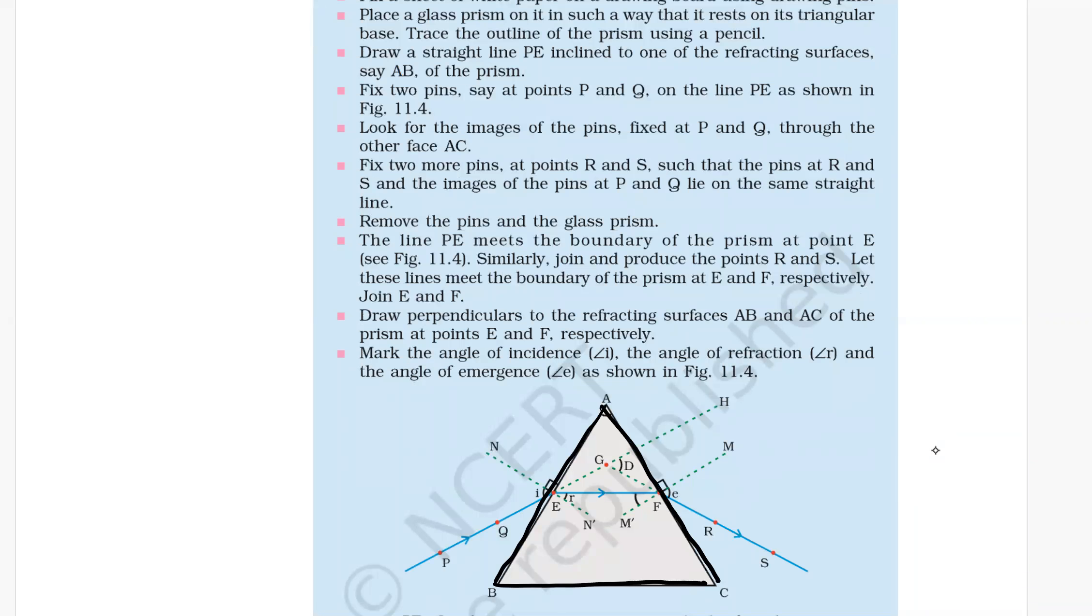Using a pencil, draw a straight line PE. This line should be inclined to one of the refracting surfaces.